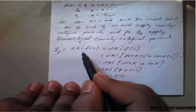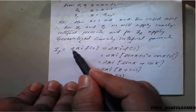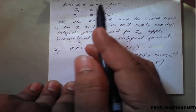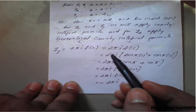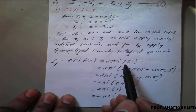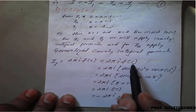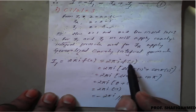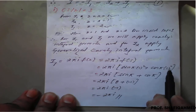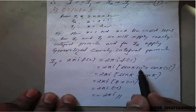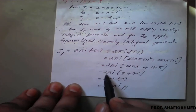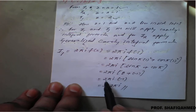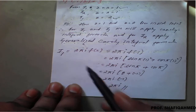For I1, applying Cauchy's integral formula gives 2πi · f(a) with a = 1, so we compute f(1) = sin(π·1²) + cos(π·1²) = sin π + cos π = 0 + (−1) = −1. Therefore I1 = 2πi · (−1) = −2πi.